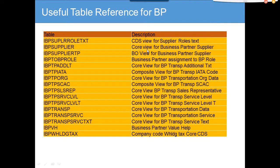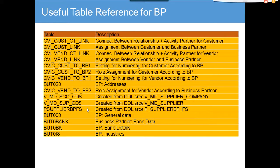IBP supplier is a very important table — it maps the business partner to a supplier, so you'll want to note it down. I'll go into the details inside the table to show how it really looks. There are also tables for company code withholding tax, which are useful for 1099 and other related reporting.